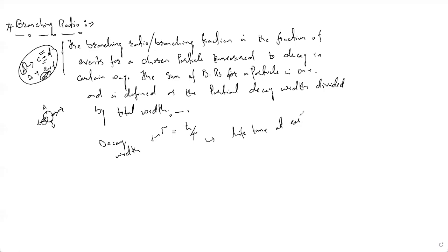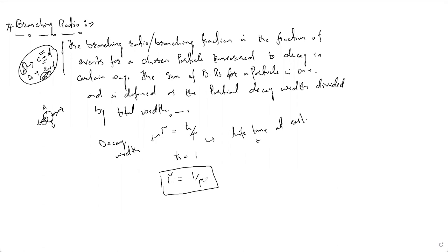The unstable particle is characterized by its lifetime at rest or equivalently by the natural decay width gamma = ℏ / τ. In natural units where ℏ = 1, the decay width is gamma = 1 / τ. So the decay width is inversely proportional to the lifetime at rest — if the lifetime is large, the decay width will be small, and if the lifetime is small, the decay width will be larger.